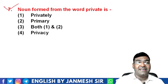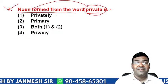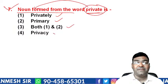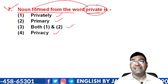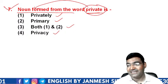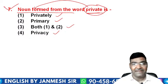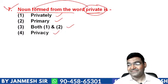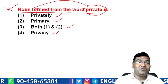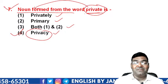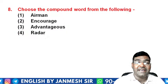Question 7: the noun formed from the word 'private'. Options are 'privately', 'primary', 'both one and two', or 'privacy'. 'Privately' is an adverb, not a noun. 'Privacy' is the noun form of 'private' — it means our personal space or right to privacy. This is also an abstract noun. The answer is D — 'privacy'.